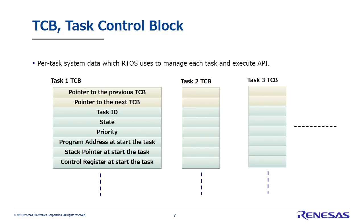Let's move on to the TCB, or task control block. The TCB stores data related to each task. For example, it contains the task ID, state, priority levels, its program address and stack pointer at time of starting, and more. There is a TCB for every task. The RTOS refers to the TCB whenever it switches tasks, or whenever a task invokes an API, and whenever necessary, it updates the data in the TCB as it runs processes.